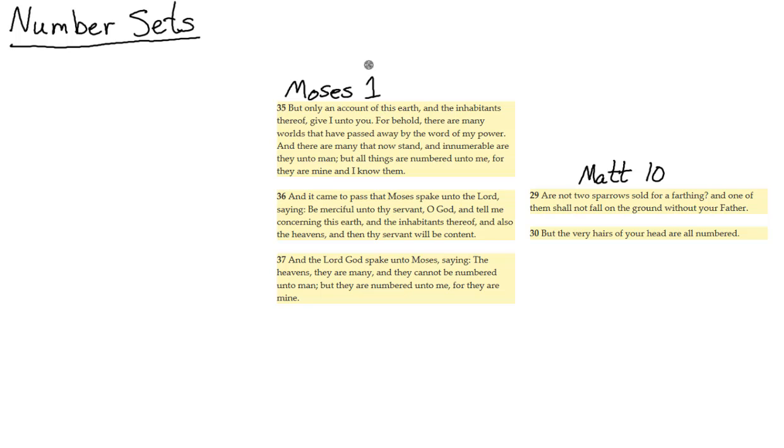Moses chapter 1, verses 35 through 37: But only an account of this earth and the inhabitants thereof give I unto you, for behold there are many worlds that have passed away by the word of my power, and there are many that now stand, and innumerable are they unto man.